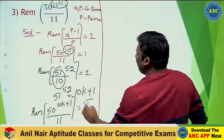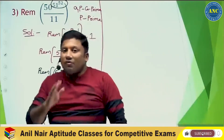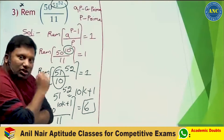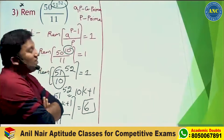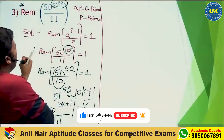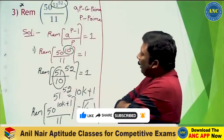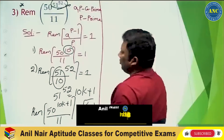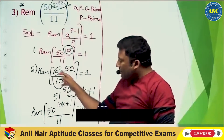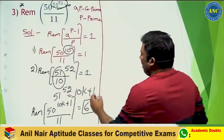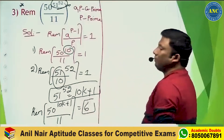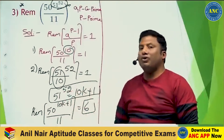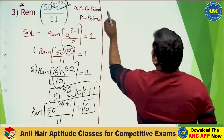50 divided by 11: 11 fours are 44, so the remainder is 6. If you understand Fermat's theorem, you can solve this very easily. First step: denominator 11 is prime, so the key power is 10. 50^10 ÷ 11 = 1. Second step: 51^52 ÷ 10 gives remainder 1, so 51^52 = 10k + 1. Therefore 50^1 ÷ 11 gives remainder 6. Please put a star mark on this question.